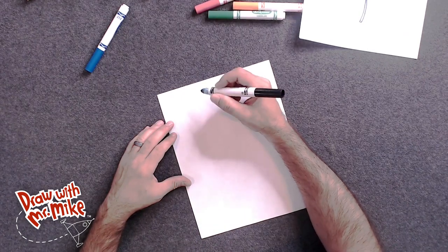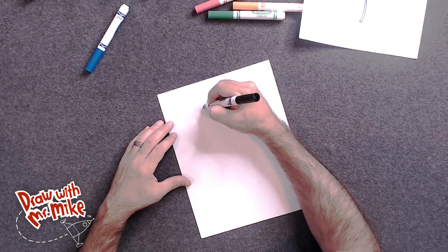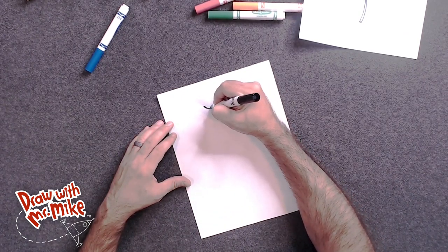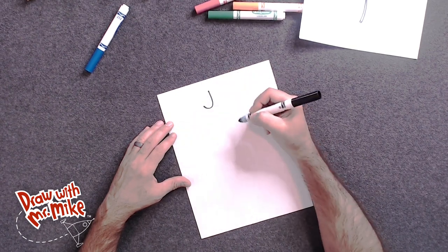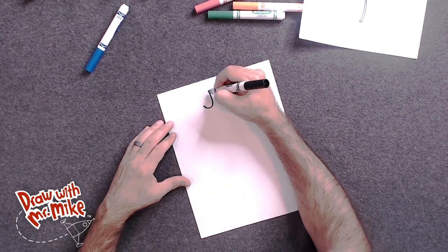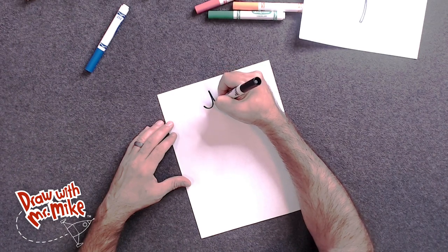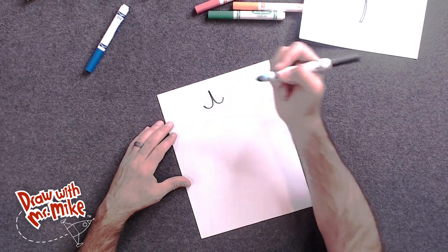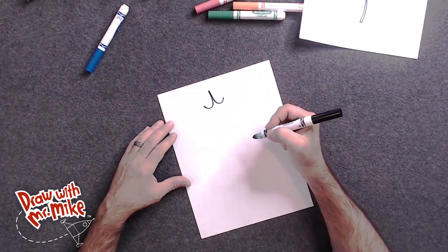First, we're going to start off with a J at the top of the page, right here. And then we're going to make an opposite J on this side, right there. And that's the very top of our maple leaf.